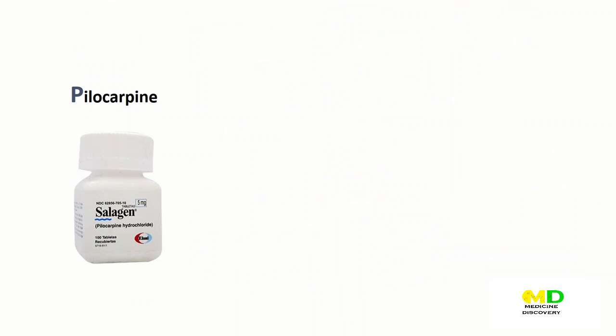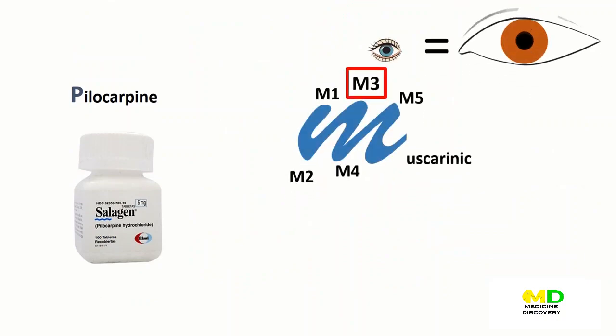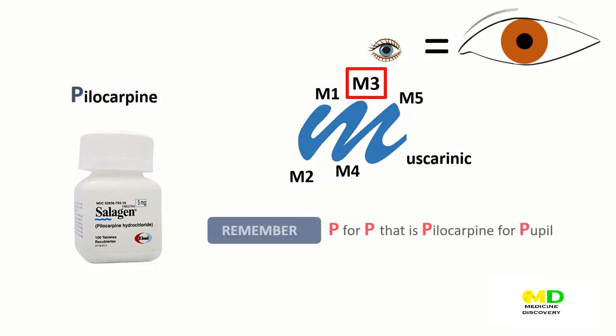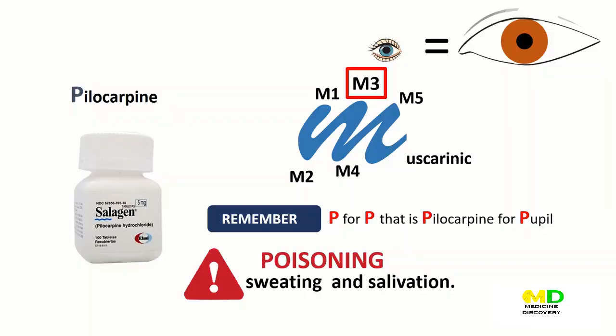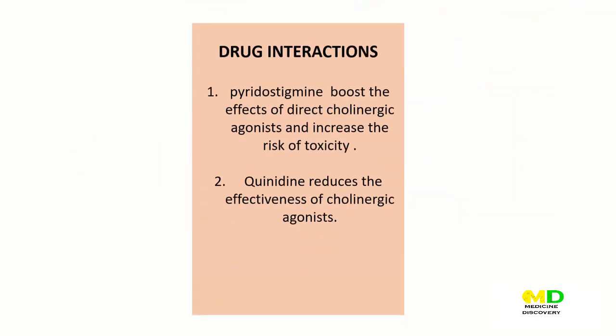Pilocarpine acts on the pupil via muscarinic receptor M3 — it activates miosis in glaucoma. Remember: P for P, that is Pilocarpine for pupil. Pilocarpine can cause blurred vision, night blindness, and brow ache. Poisoning with this agent is characterized by exaggeration of various parasympathetic effects, including profuse sweating and salivation. Some indirect cholinergic agonists, such as pyridostigmine, boost the effects of direct cholinergic agonists and increase the risk of toxicity. Also, quinidine reduces the effectiveness of cholinergic agonists.